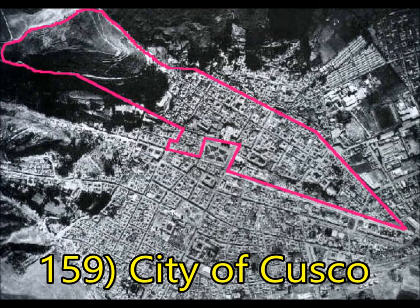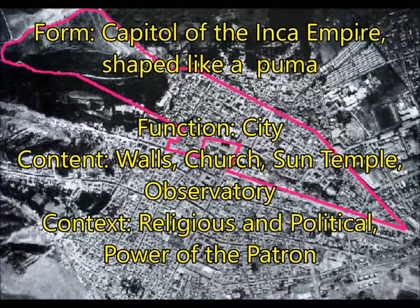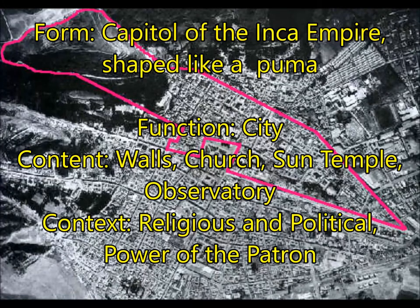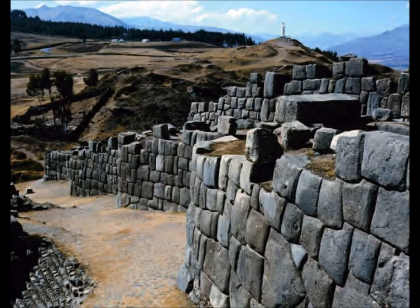Here we have the city of Cuzco — yet another South American city. You need to remember it was the capital of the Inca Empire (you can remember this from the movie Emperor's New Groove where his name is Cuzco). It is shaped like a puma, which is still debated whether they did that on purpose. It has specially built walls, a temple to the sun that was supposedly covered in gold, and an observatory at the top. For context, the power of the patron represents the entire empire's power.